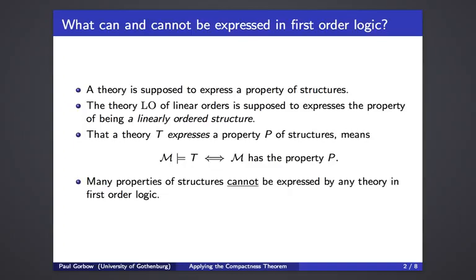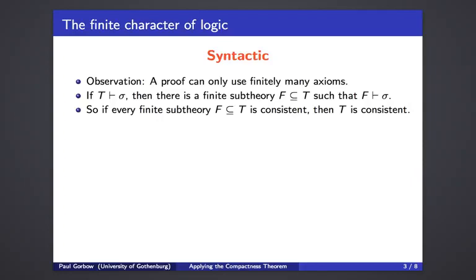Many properties of structures actually cannot be expressed by any theory in first-order logic, and we will see how this comes out. What the compactness theorem boils down to is really the finite character of logic. The basic observation is that proofs are necessarily finite, so a proof can only contain finitely many axioms. In particular, if T is the theory that proves the sentence sigma, then there must be a finite sub-theory that proves sigma, because the proof could only have used finitely many axioms — just take those finite many axioms to be F.